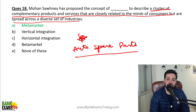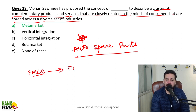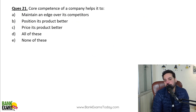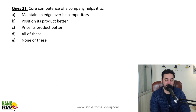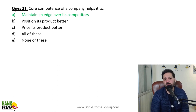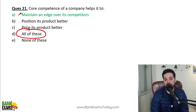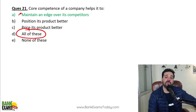Vertical integration was explained in the previous examples. Horizontal integration is when, for example, one FMCG company acquires another FMCG company to increase their market share — that would be horizontal integration. Core competence of a company helps it to maintain an edge over its competitors, position its product better, and price its product in a better way. The core competence of a company helps it reduce prices — if they are in a price war, they can make better products at lower prices.